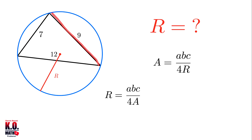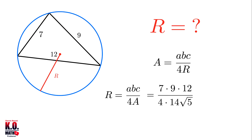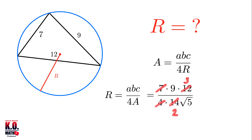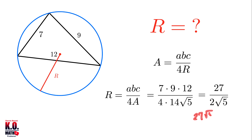Substituting the values, r equals (a times b times c) over (4 times the area of the triangle), which is 14 square root of 5. After simplifying and cancelling common factors, we're left with 27 over 2 square root of 5. Therefore the circumradius is equal to 27 over 2 square root of 5, and rationalizing the denominator gives us 27 square root of 5 over 10.